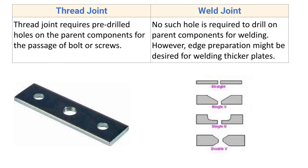Thread joint requires a pre-drilled hole on the parent component for the passage of bolt or screws. Whenever you want to join two components with a threaded joint, screws or bolts are used, and for their entry we have to drill a hole over the parent component. For weld joint, no such hole is required to be drilled on the parent component.